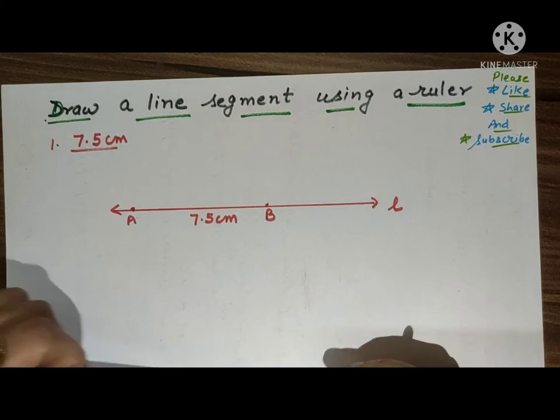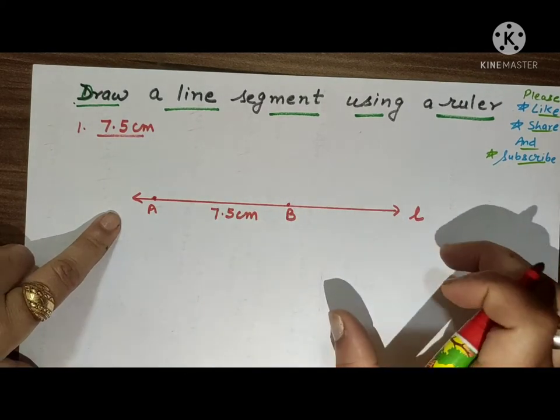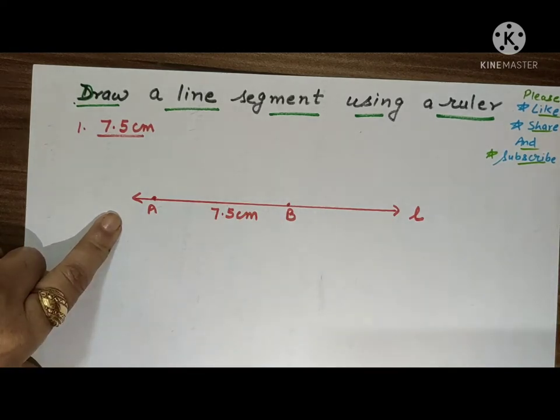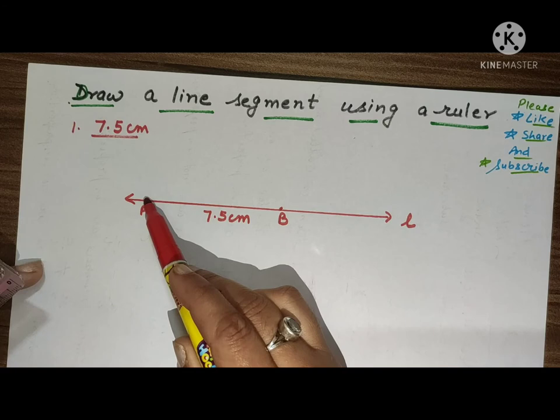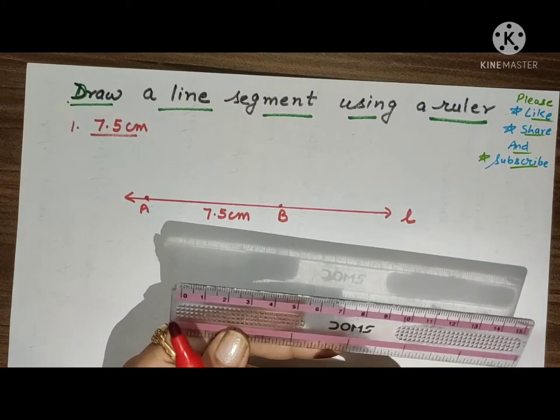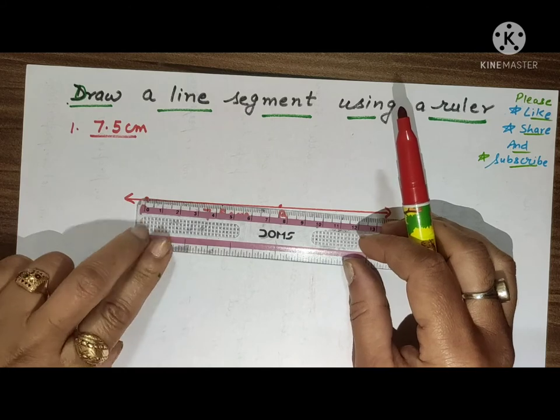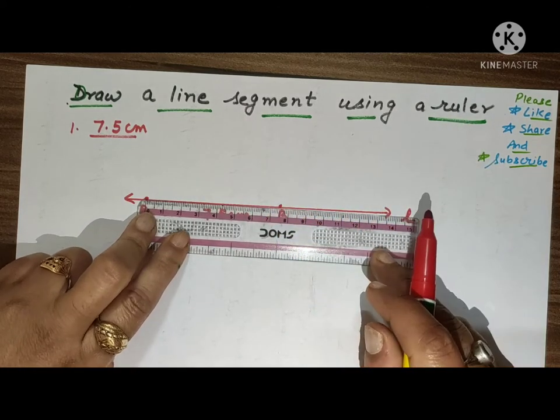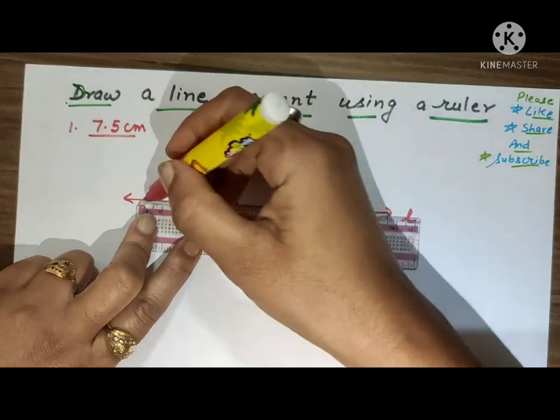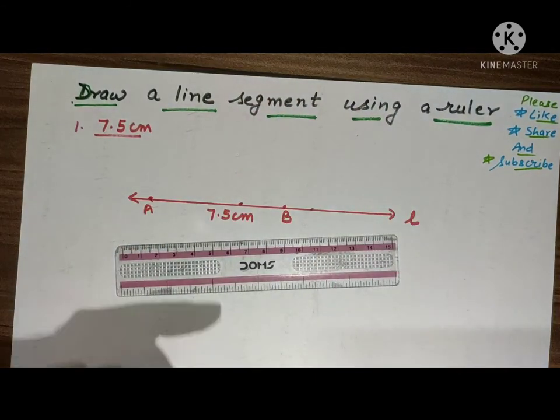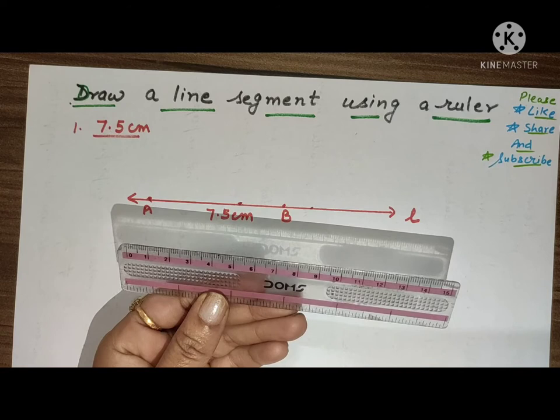Seven point five we have to coincide with this point. Then we have to mark 7.5. The process is the same. We have to mark 7.5 cm according to the given question.